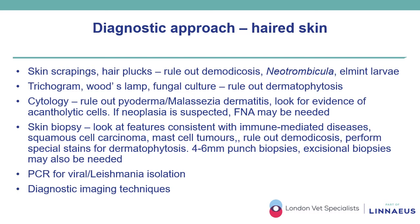Depending on the size of the patient, I use a 4 to 6 mm punch biopsy, but in specific cases excisional biopsies may also be needed — especially if you identify an intact pustule and want to excise it, since using a punch biopsy might rotate and create forces that break the pustule. PCR is used for leishmaniosis or viral dermatosis. When paraneoplastic syndromes or systemic involvement are suspected, diagnostic imaging can be very helpful.